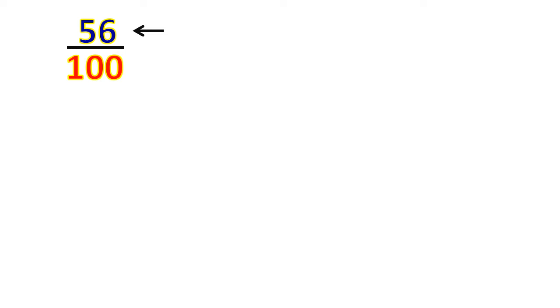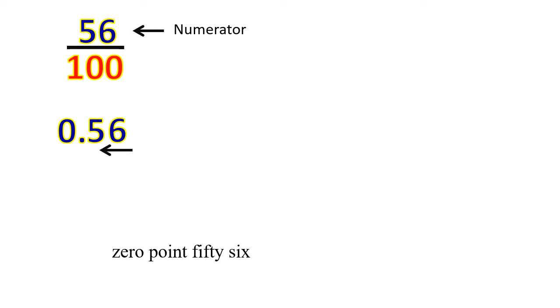Look at this example. Again, 56 upon 100 and you have to convert this into decimal form. Here 56 is in the numerator, so you are going to write 56. But how many zeros are present in the denominator? Two. So after 2 digits from the right-hand side, you are going to put a dot. The answer is 0.56.